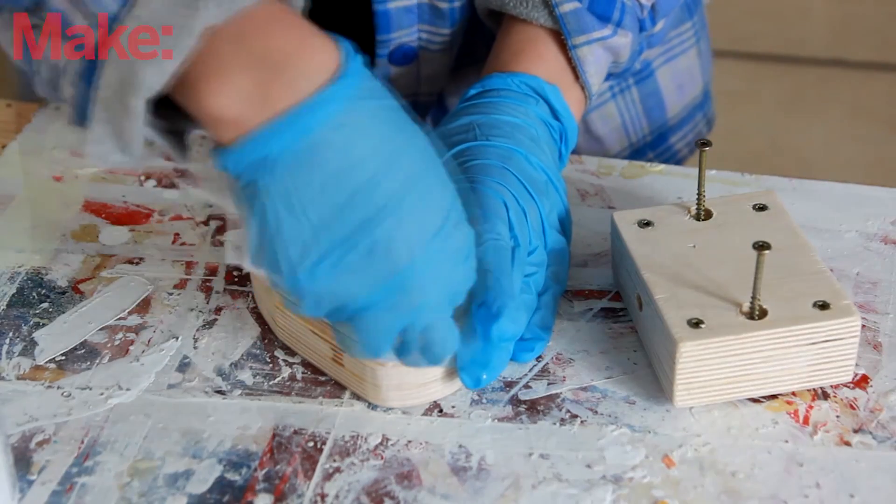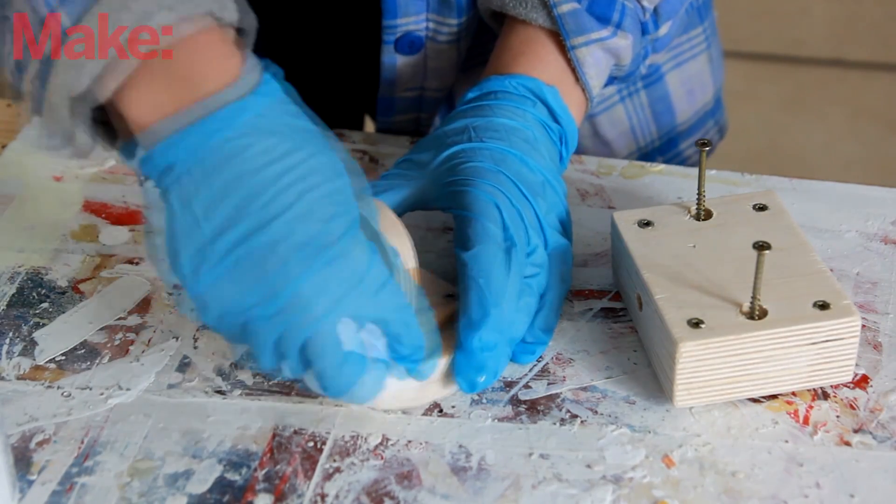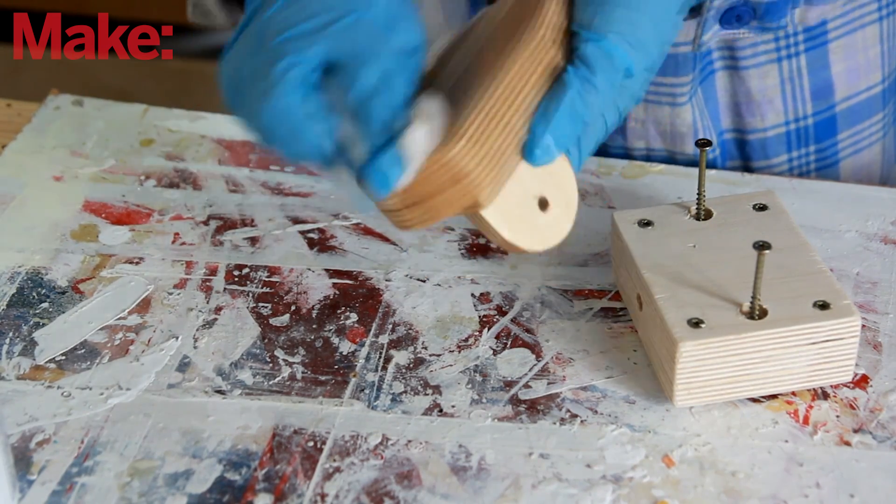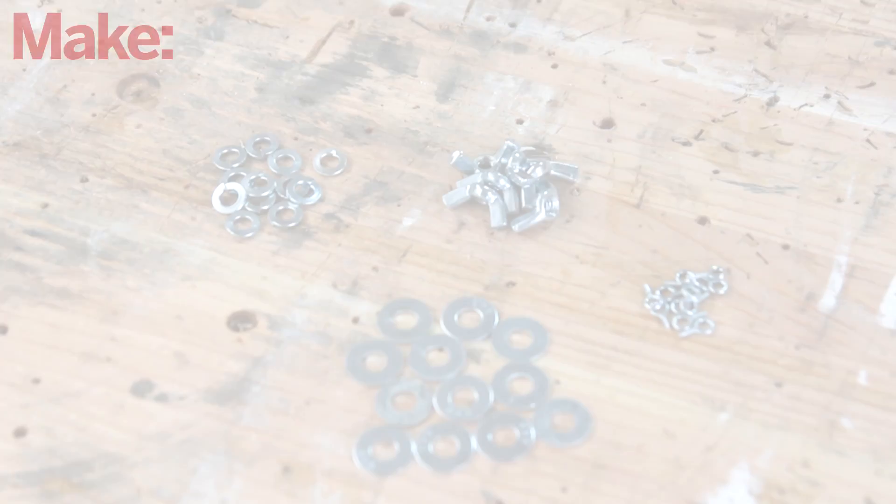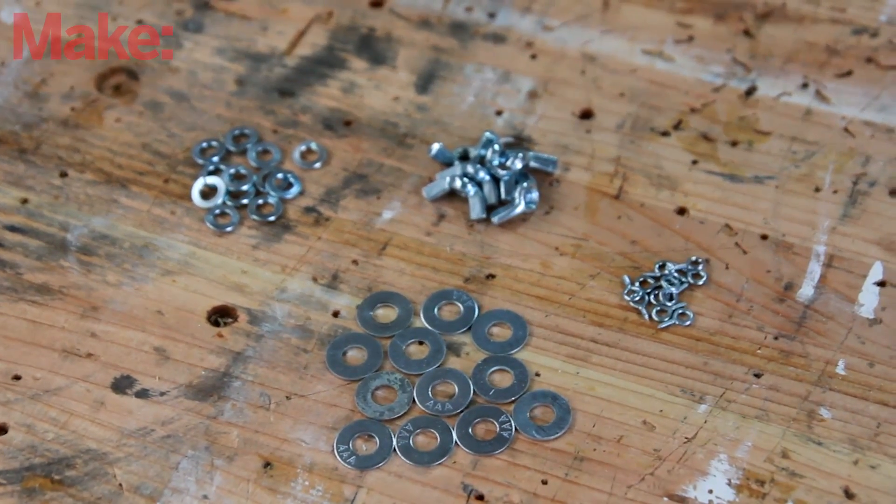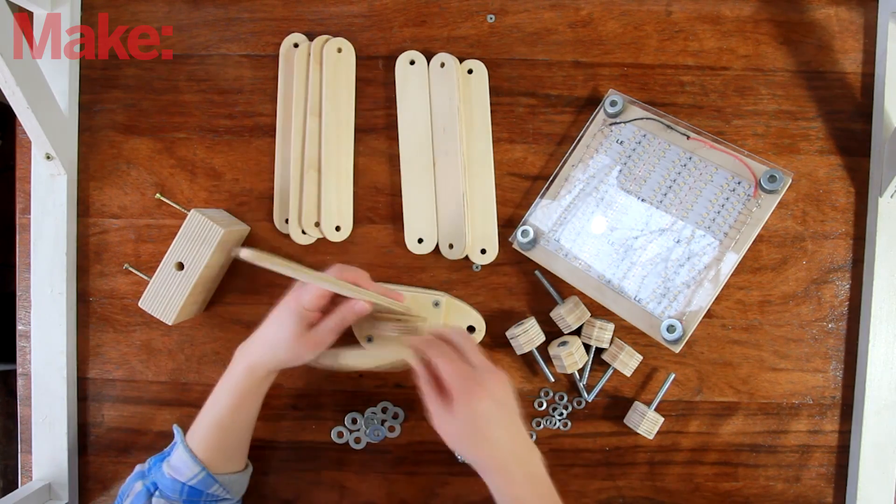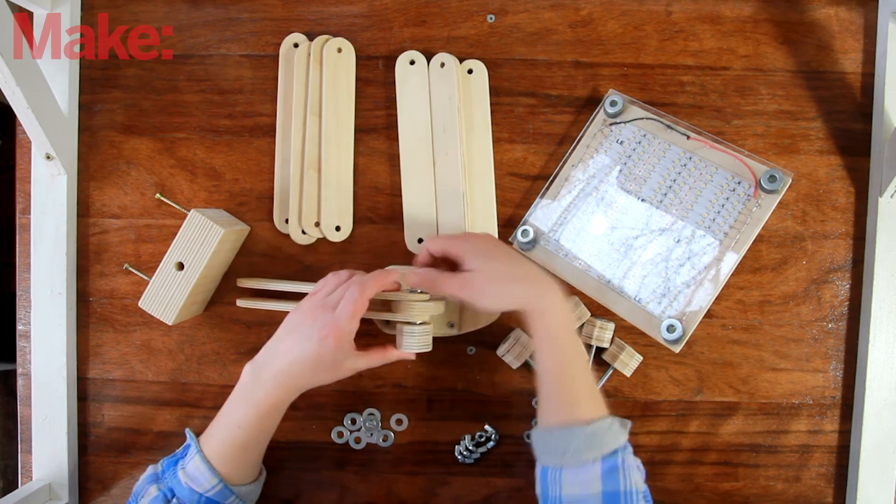To protect the plywood, I'm simply putting on some shellac, which is great because it dries so quickly. And it's time to assemble the whole thing. Here is the hardware, and here are all the plywood pieces. Then it's just a matter of putting the whole thing together.